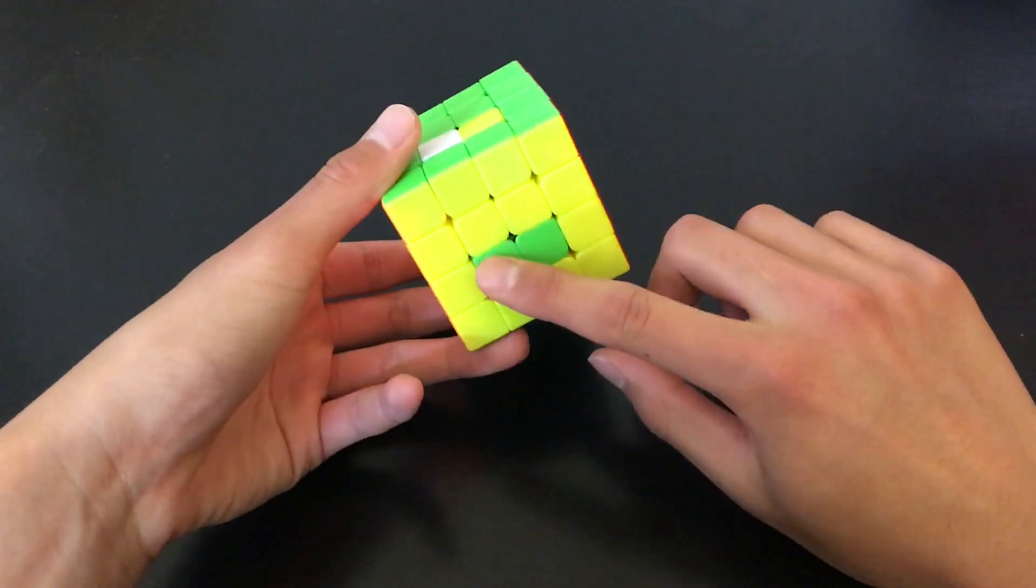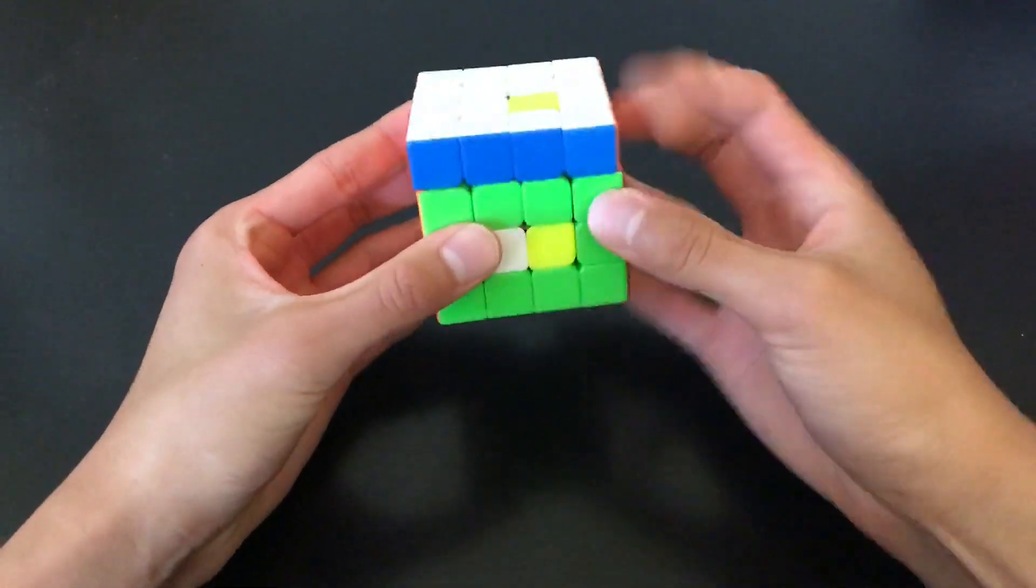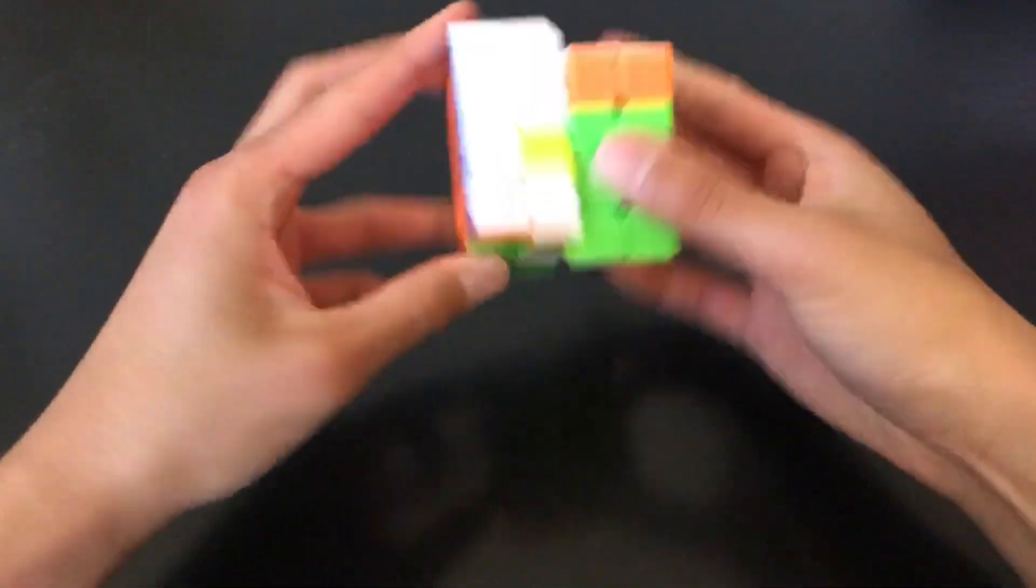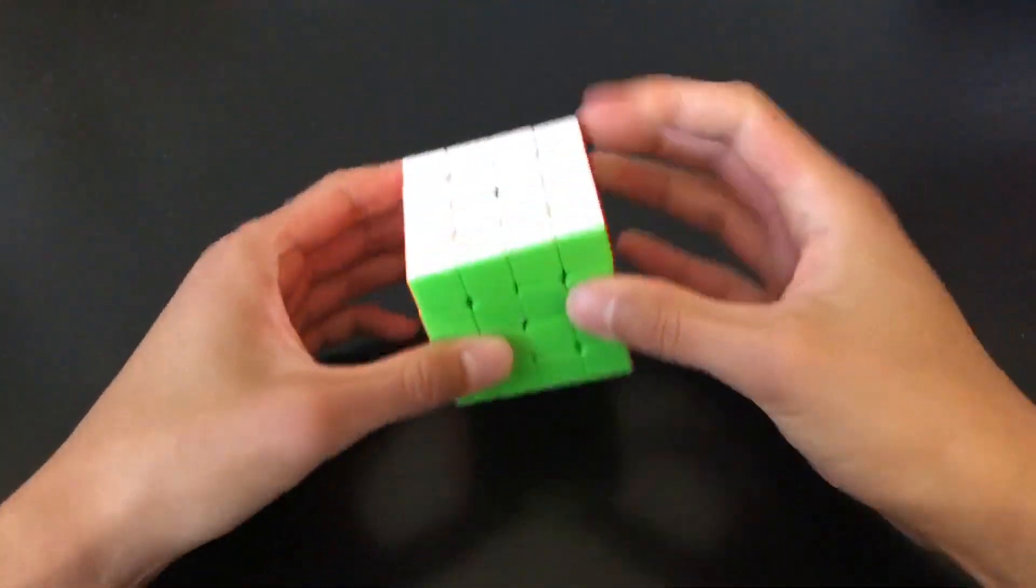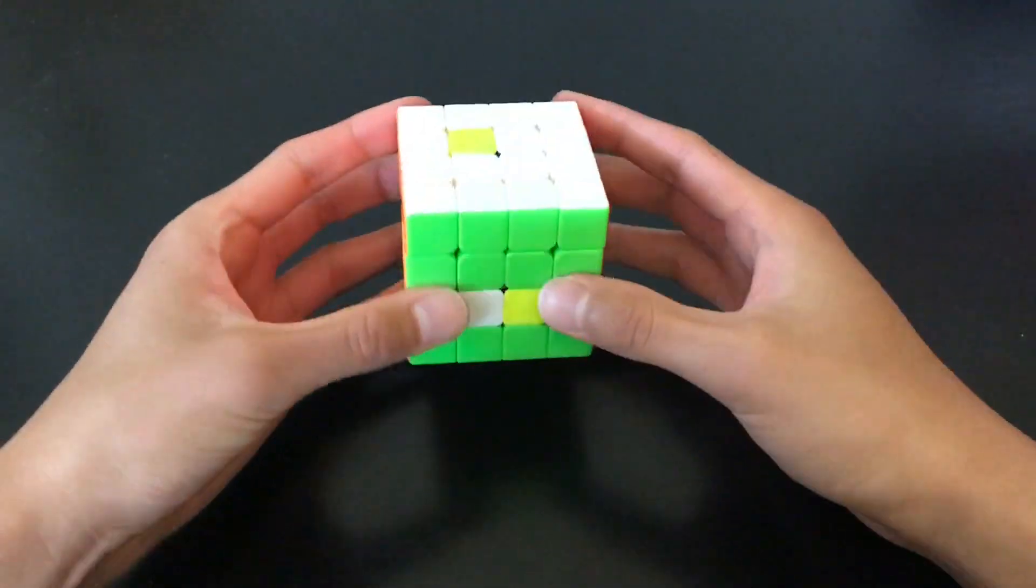However, if we shoot to this sticker first, we can get a different solution, which has slightly faster comms. A third solution would be to solve these two centers and then float the last two.